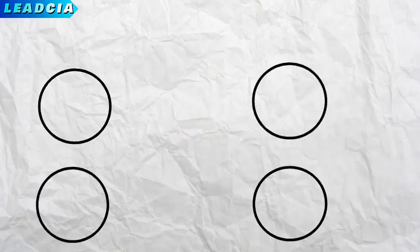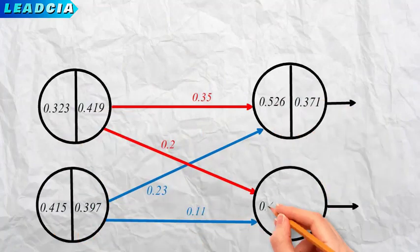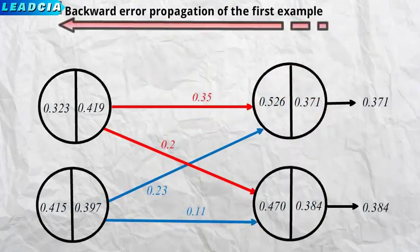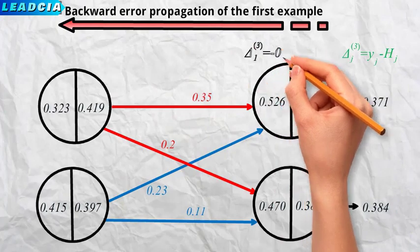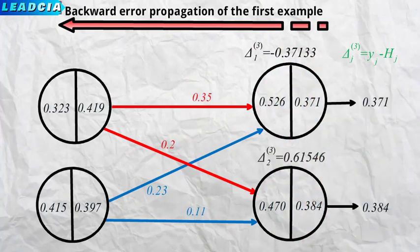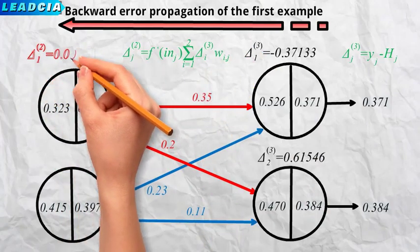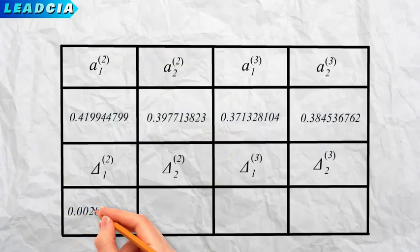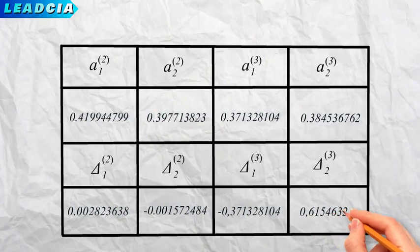Deltas are calculated at each neuron except for the bias and input neurons. The values of these deltas are calculated by backpropagating the error prediction made by the network. The errors at the output layer are equal to y minus h, which means the desired output minus the current output. The hidden layer neuron deltas are calculated by applying this formula. The values of the deltas will be added to the table where the a's have been recorded.